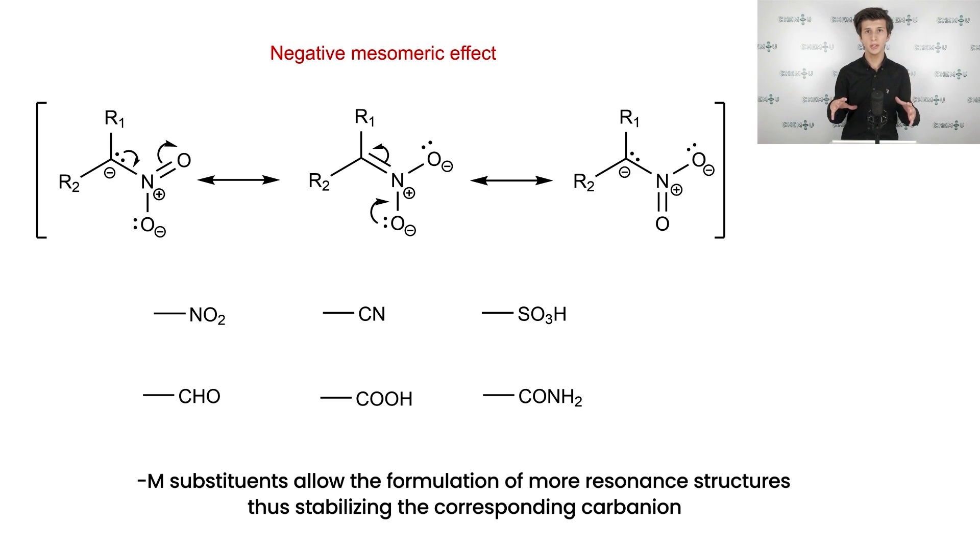Some typical minus M substituents are also given. Summing it up, electron withdrawing groups stabilize carbanion and thus favor the E1CB mechanism. If they are not present in substrate structure, then elimination from conjugate base does not happen.